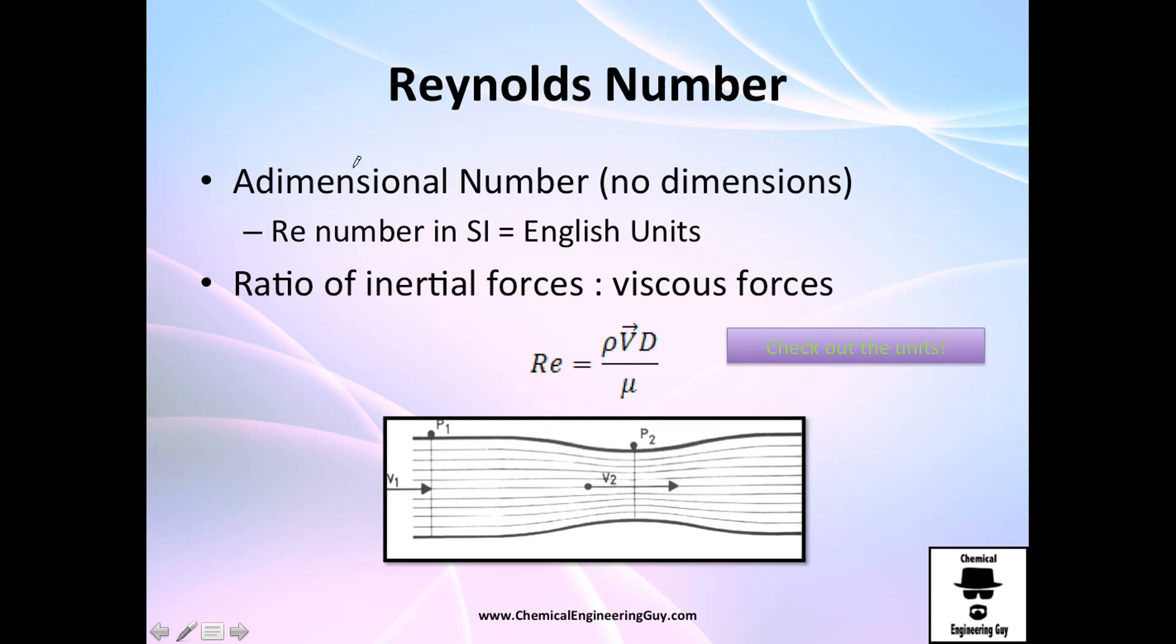The famous Reynolds number is a dimensionless number, which means it has no dimensions. So Reynolds number in the English system should be the same as the one in the SI system. By definition, it's the ratio of inertial forces versus viscous forces.